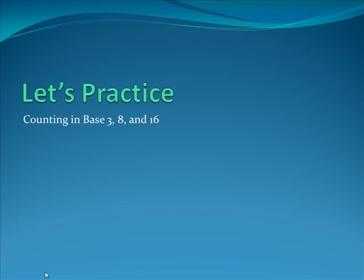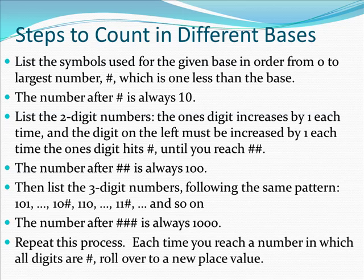So let's practice counting in different bases. We're going to practice counting in base 3, base 8, and base 16. You always start by listing the symbols that you're going to use, from 0 to the largest number. Let's call that number pound. That's always going to be 1 less than the base. So as soon as you reach the number pound, the largest symbol, you're always going to have to follow that with a 1, 0. Just like in base 10, we follow the largest digit 9 with the number 10. And you list the 2-digit numbers by increasing the 1's digit. And every time you get a pound in the 1's place, you're going to have to roll over to the next higher digit. And you keep doing that until you reach pound pound, the largest 2-digit number. Following that is 1, 0, 0. In the base 10 system, it's the number 100. Then you're going to list the 3-digit numbers following the same pattern until you get to pound, pound, pound, and so on, repeating the process.